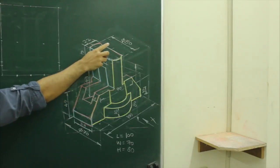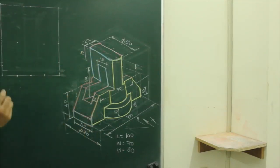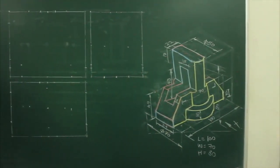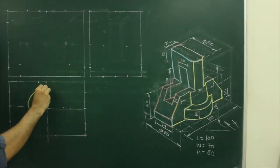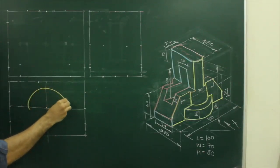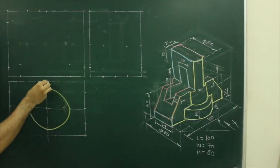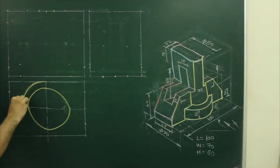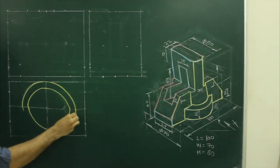First we will start with the circle, where diameter is 50 and diameter is 70. First we will draw these two. Mark the center point in your layout and draw two circles — one with radius 25 and the other with radius 35.